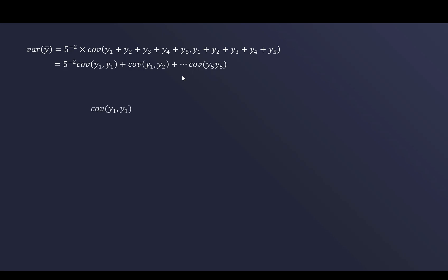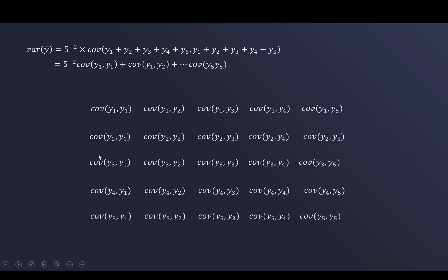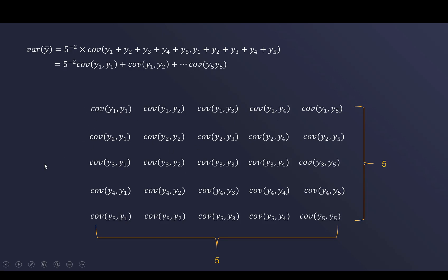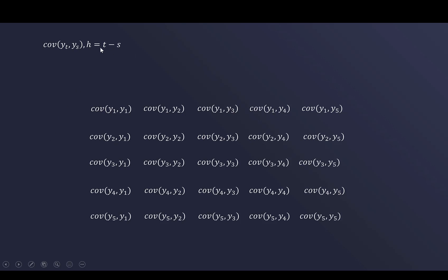Listing the pairs explicitly: Cov(y1,y1), Cov(y1,y2), ..., Cov(y1,y5), then Cov(y2,y1) through Cov(y2,y5), and so on — five rows and five columns giving 25 total pairs. Since Y is stationary, we introduce lags: for time points t and s, lag h = t − s. So Cov(y1,y1) has lag 0; Cov(y1,y2) has lag 1−2 = −1; Cov(y1,y3) has lag −2; Cov(y1,y4) lag −3; Cov(y1,y5) lag −4.